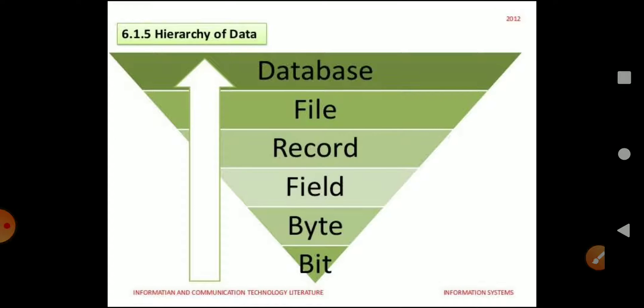Now let's move to the hierarchy of data: bit, byte, field, record, file, and database. What is a bit? A bit is the smallest unit to measure information. It is the basic unit of information in information technology and generally comprises either 0 or 1. It is also known as binary — the binary language which comprises only 0 and 1.